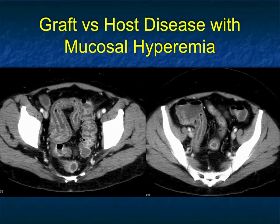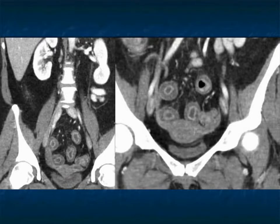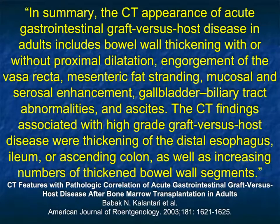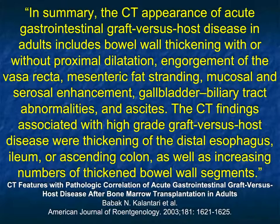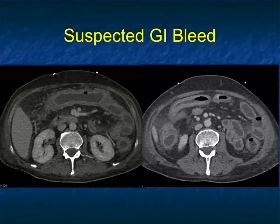Another example: look at the mucosal hyperemia, particularly impressive in graft-versus-host disease, with that cross-sectional look of small bowel. CT findings associated with high-grade graft-versus-host disease include thickening of the distal esophagus, ileum, or ascending colon, and an increasing number of thickened bowel wall segments. Findings include proximal dilatation, engorgement of the vasa recta, mesenteric fat stranding, mucosal and serosal enhancement, and ascites — long-segment involvement is the pattern.